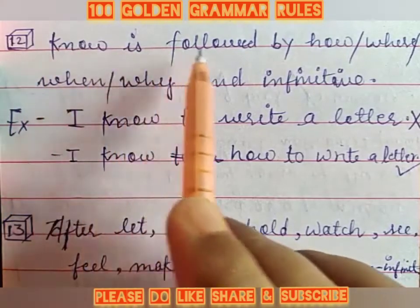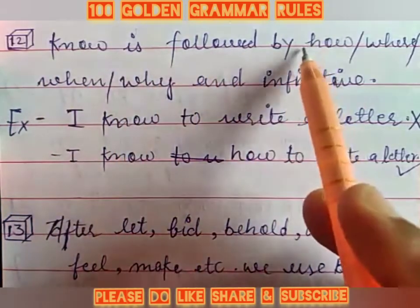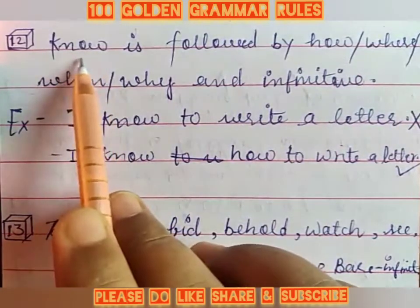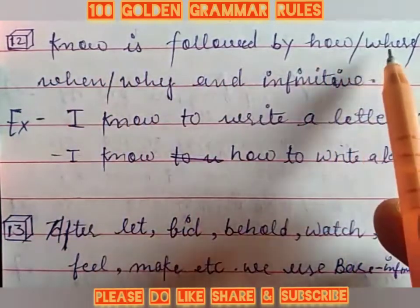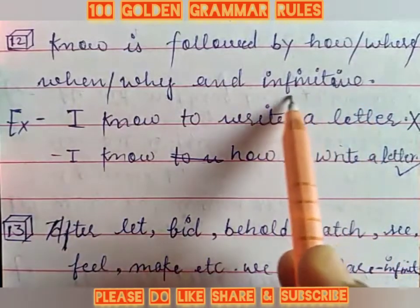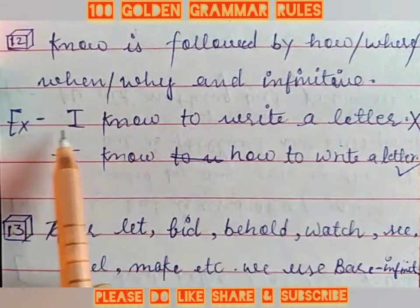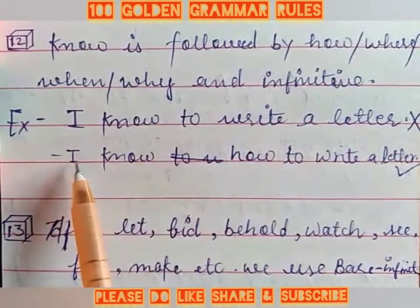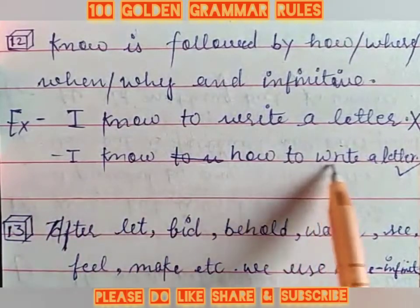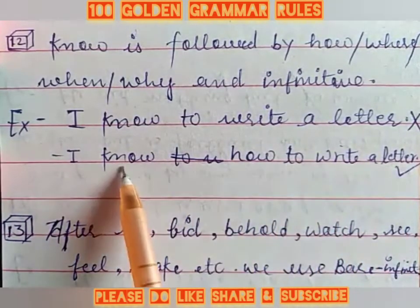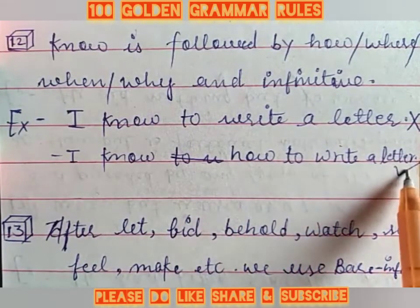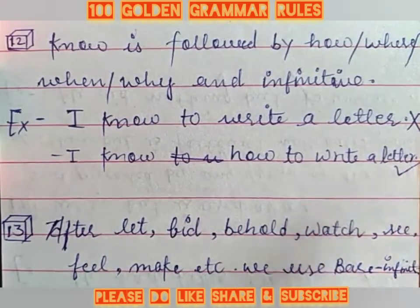Now, Point 12: 'Know' is followed by how, where, when, why and infinitive. For example, 'I know to write a letter' is incorrect. The correct form is 'I know how to write a letter.' So 'know' must be followed by a question word like how, where, when, or why before the infinitive.